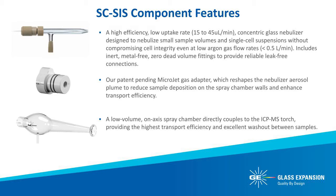Unlike typical concentric nebulizers, the Micromist HE is designed to reach optimum back pressure at much lower gas flows — for example, around 0.3 to 0.35 liters per minute argon gas flow. The optimum liquid flow rate has been found to be in the range of 20 to 40 microliters per minute, most commonly delivered by a syringe pump, as the Micromist HE does not self-aspirate. All gas and liquid connections are made using Glass Expansion's metal-free zero dead volume fittings to provide reliable leak-free connections.